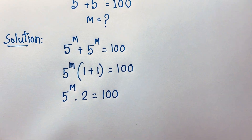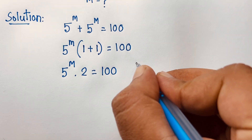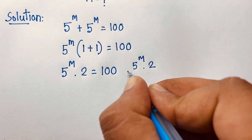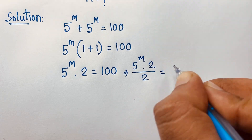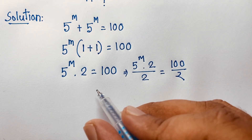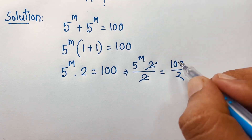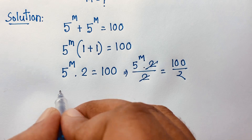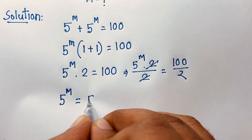Now I divide both sides by 2. So 5 to the power of m times 2 over 2 is equal to 100 divided by 2. The 2's cancel and 100 divided by 2 will be 50. So 5 to the power of m is equal to 50.